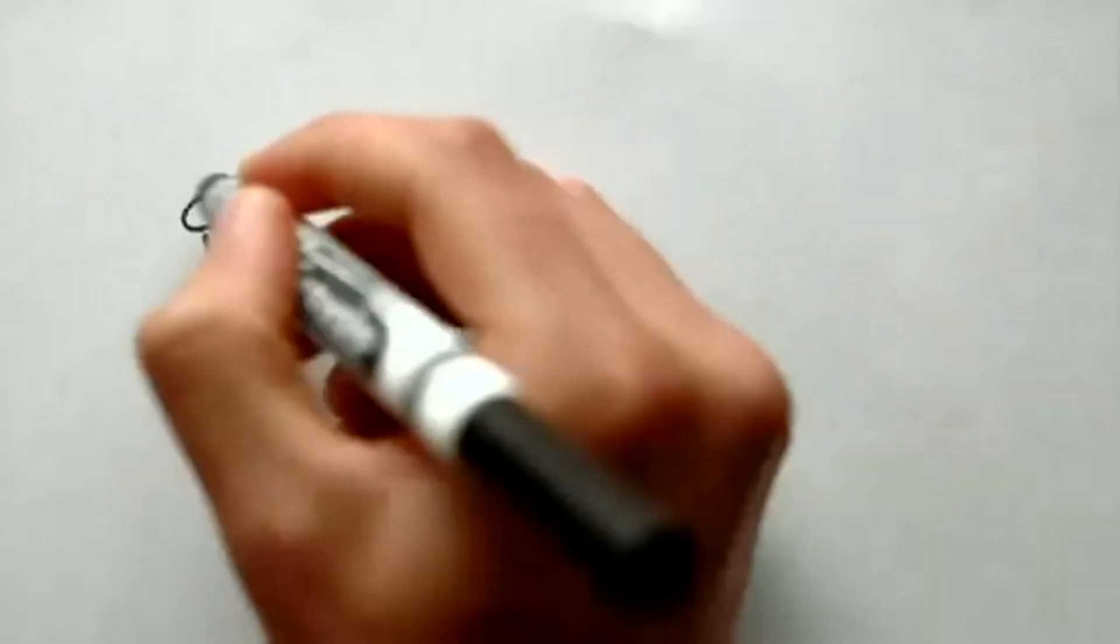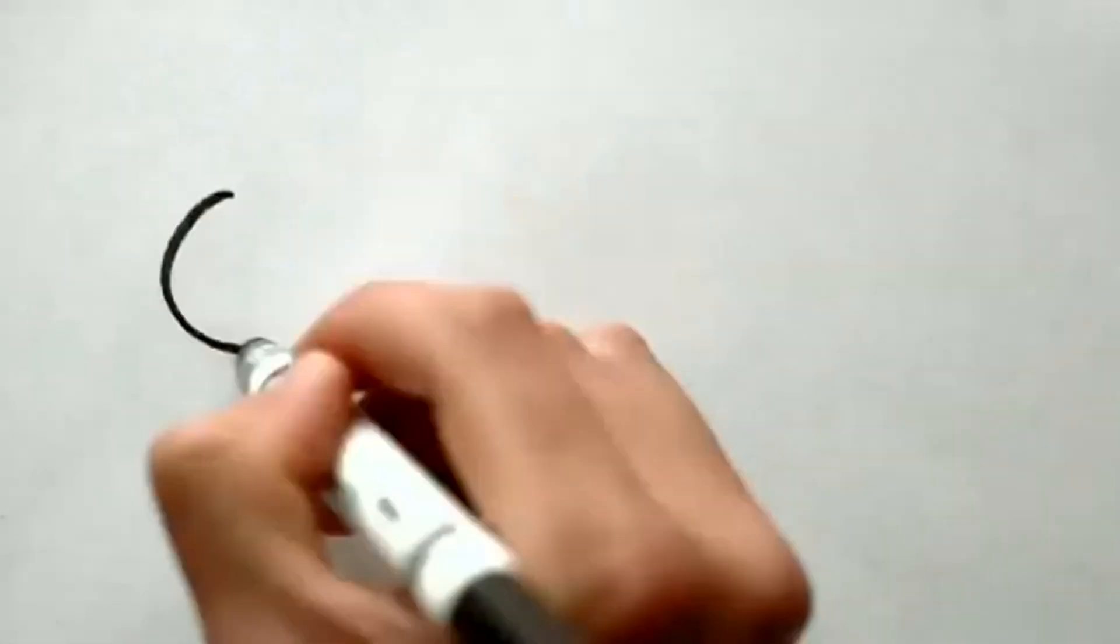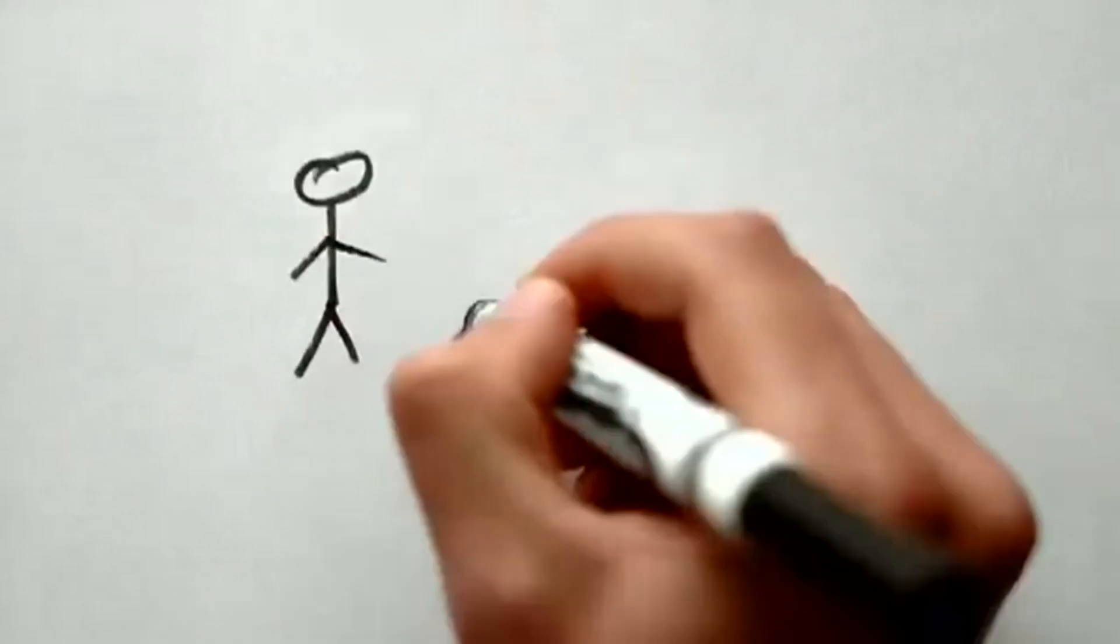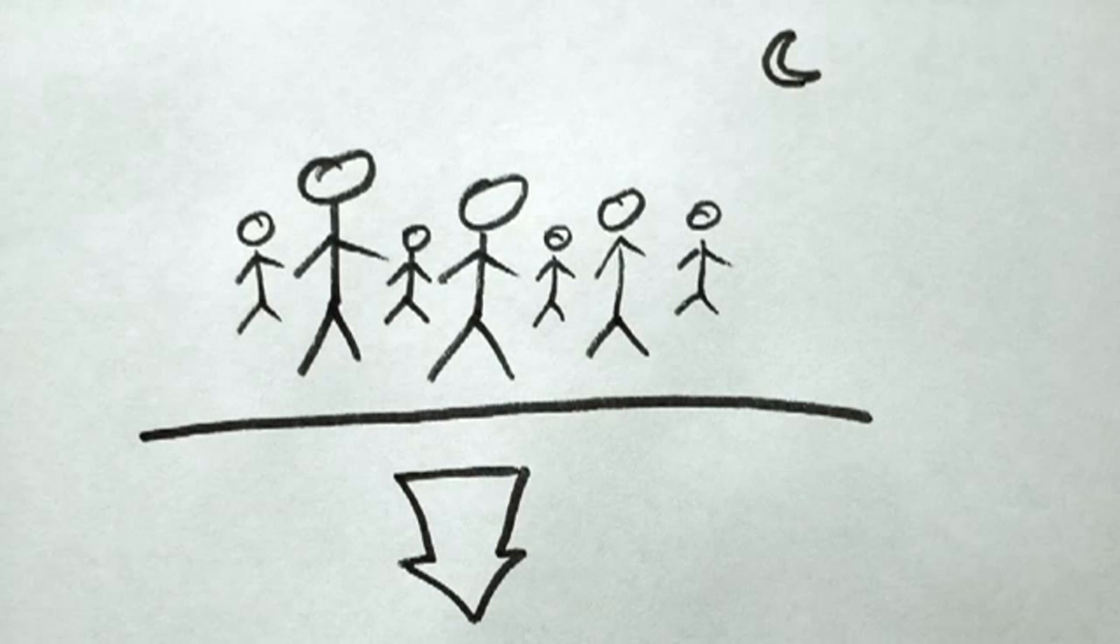He also discovered that the strength of gravity is proportional to the mass of the objects in question. The more massive an object, the stronger the gravitational force. That's why we can all feel the earth pulling on us, but don't really notice the pull of the moon. It's smaller and farther away.